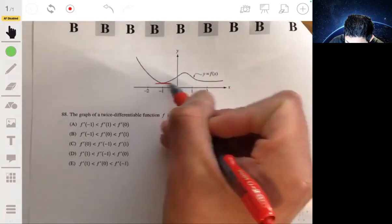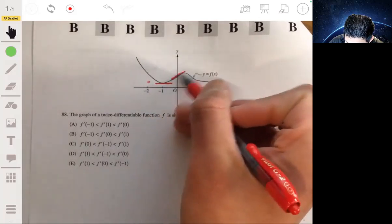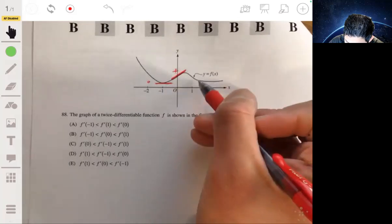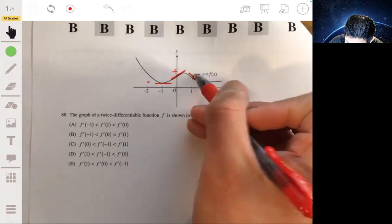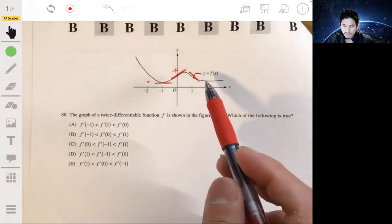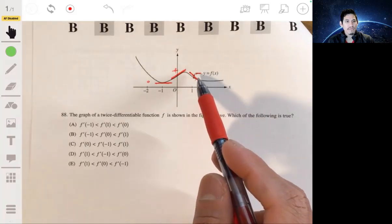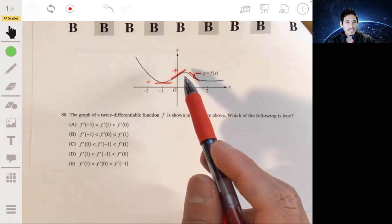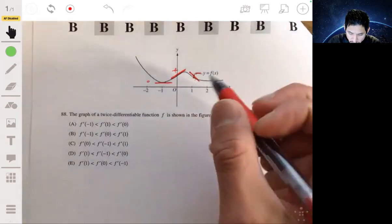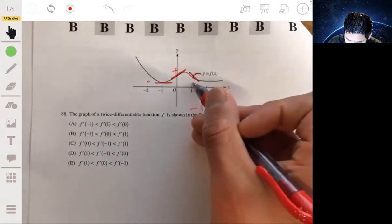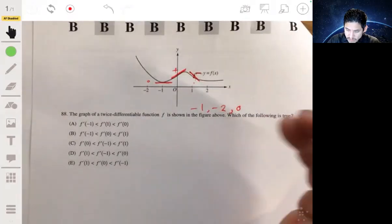So at negative 1, the tangent line looks like it's 0. At 0, the tangent line looks positive. And at 1, tangent line looks negative. So it should go from f prime of 1 is less than f prime of negative 1, which is less than f prime of 0. If we're always saying less than, 1 is the smallest, then negative 1, and then 0, just based on the signs.